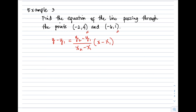Identify the coordinates: the first point gives x₁ = −2 and y₁ = 4, and the second point gives x₂ = −6 and y₂ = 1. Be consistent — x₁ is always paired with y₁, and x₂ is always paired with y₂.